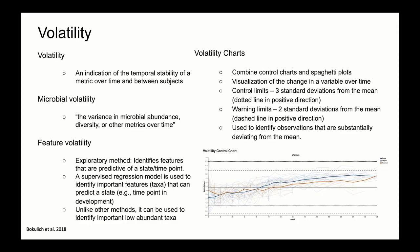Another aspect of the QIIME 2 longitudinal plugin is the feature volatility action. The feature volatility method wraps the QIIME 2 sample classifier and uses supervised random forest regression, at least by default. This identifies features that are predictive of a state or time point, and is advantageous because it's not biased towards dominant taxa. The feature volatility action provides interactive volatility plots of feature abundances across time, as well as feature importance values and descriptive statistics, including global mean, global variance, net average change, and cumulative average change.